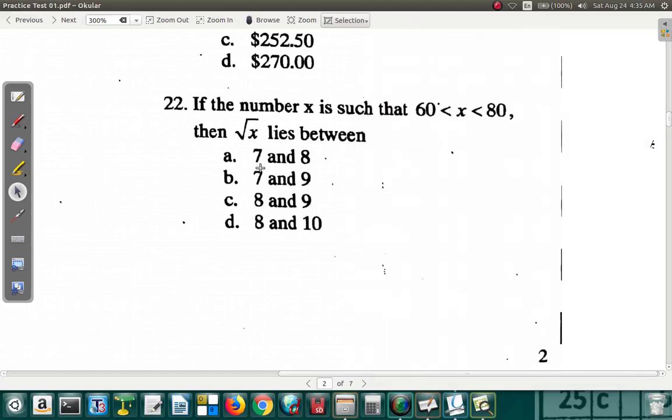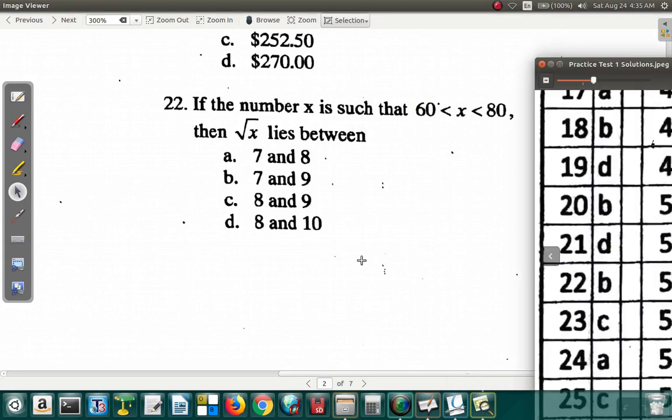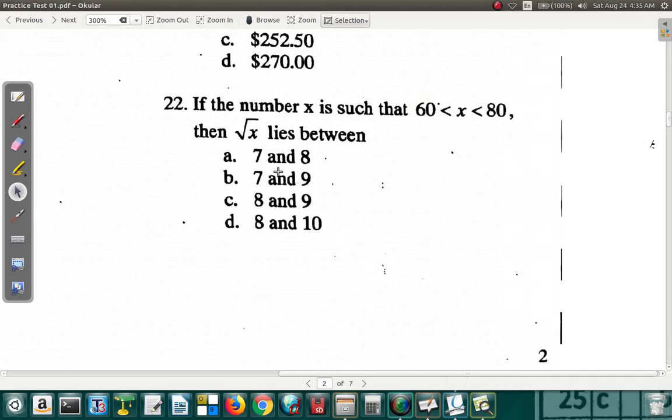Question 22. 22 is supposed to be B, but anyway, let's see. If the number X is such that X is between 60 and 80, then the square root of X lies between. Alright, I think there is some issue with this question, but anyway, let's look at it.